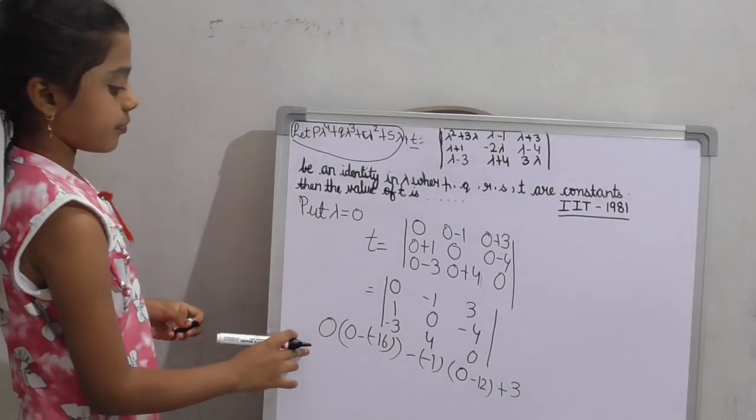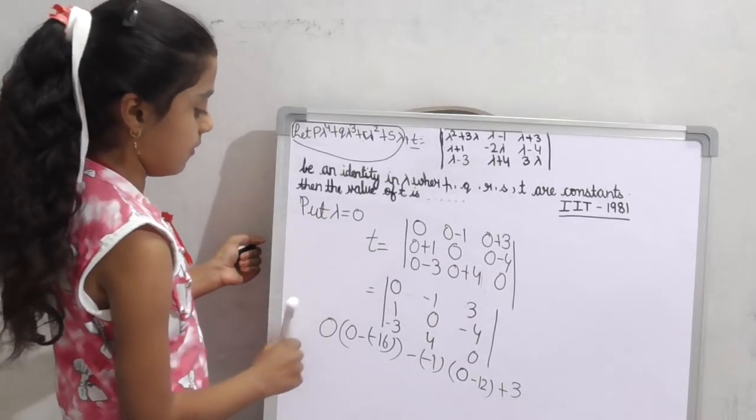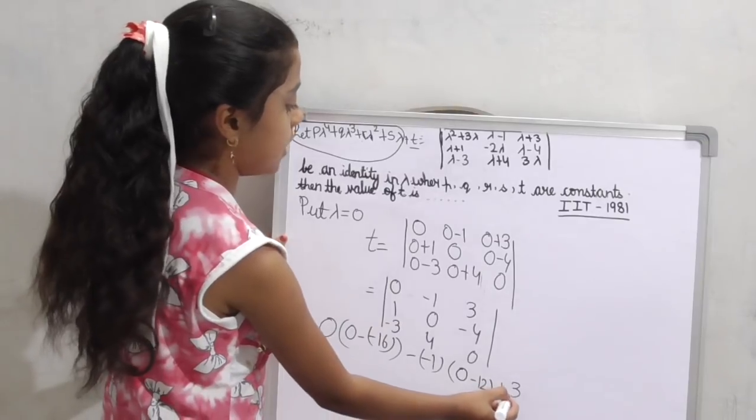In the expansion, the first element is plus, second is minus, and third is plus.